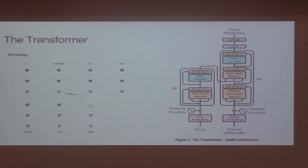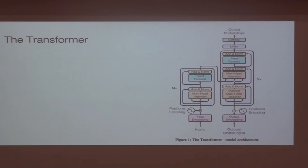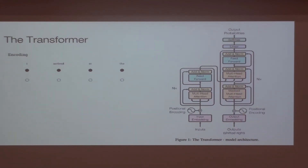The whole architecture can accept things of variable length. There is the length of the input and the length of the output, and they're separate — they don't have to be equal. In previous architectures, inputs and outputs were the same length; here they're not.